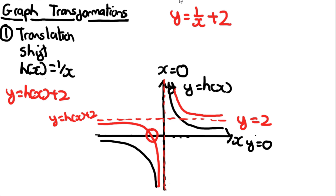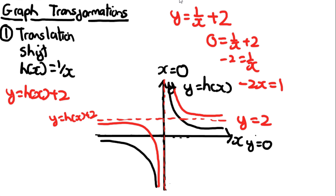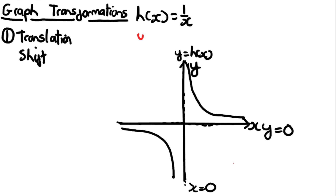There is now a root on the transformed reciprocal graph. Unlike cubics and quartics, this is straightforward to find. To find the root, set y = 0: 0 = 1/x + 2, so −2 = 1/x, therefore −2x = 1, and x = −1/2. So the root can be labelled as −1/2.